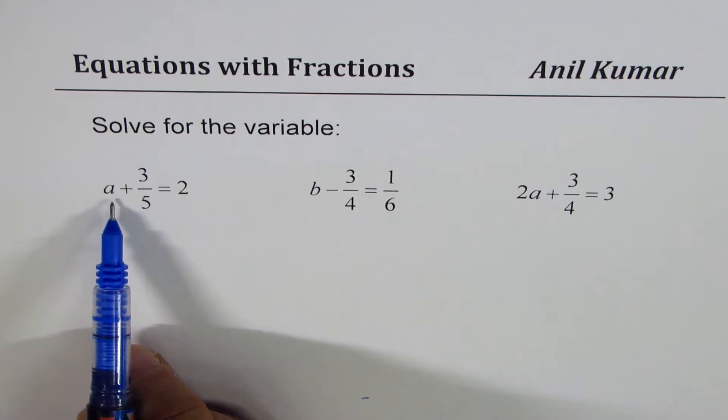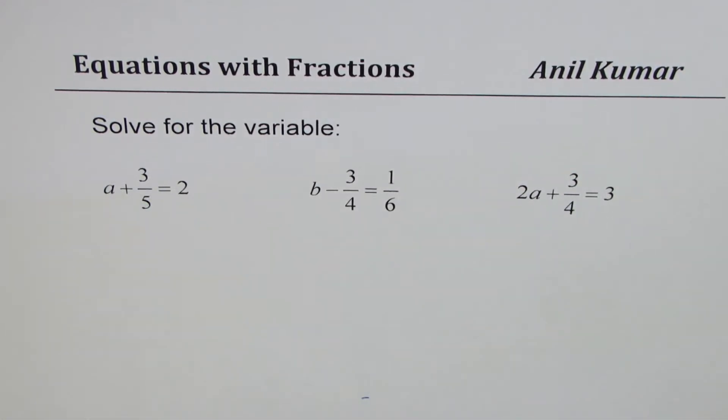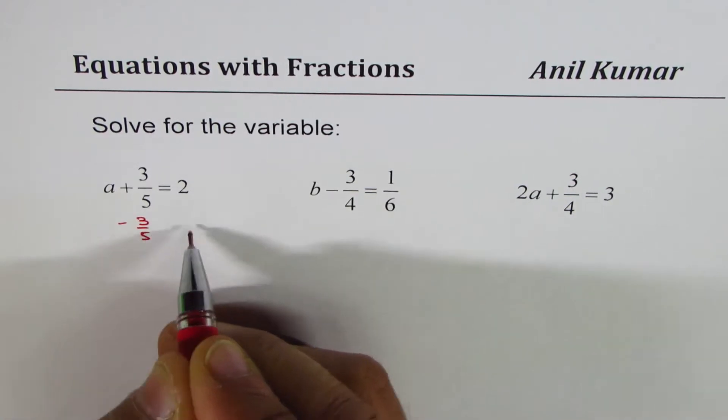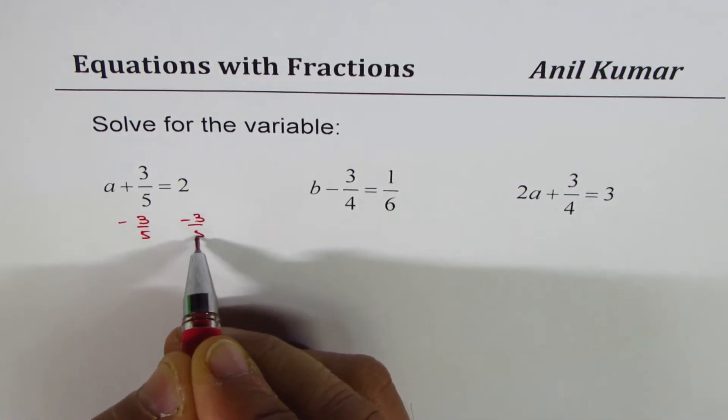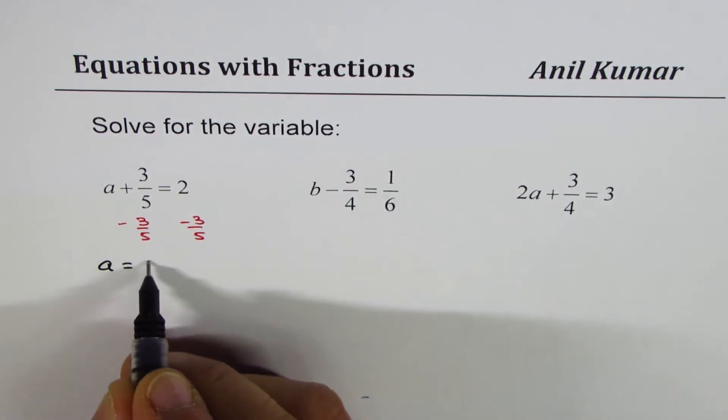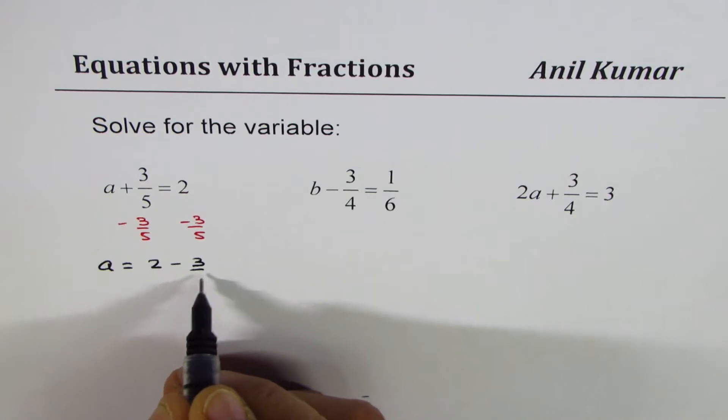We need to isolate a, right? So we could take away minus 3 over 5 from both sides. We'll do minus 3 over 5 from both sides. So that is the strategy. That will lead to a on the left side equals 2 minus 3 over 5.